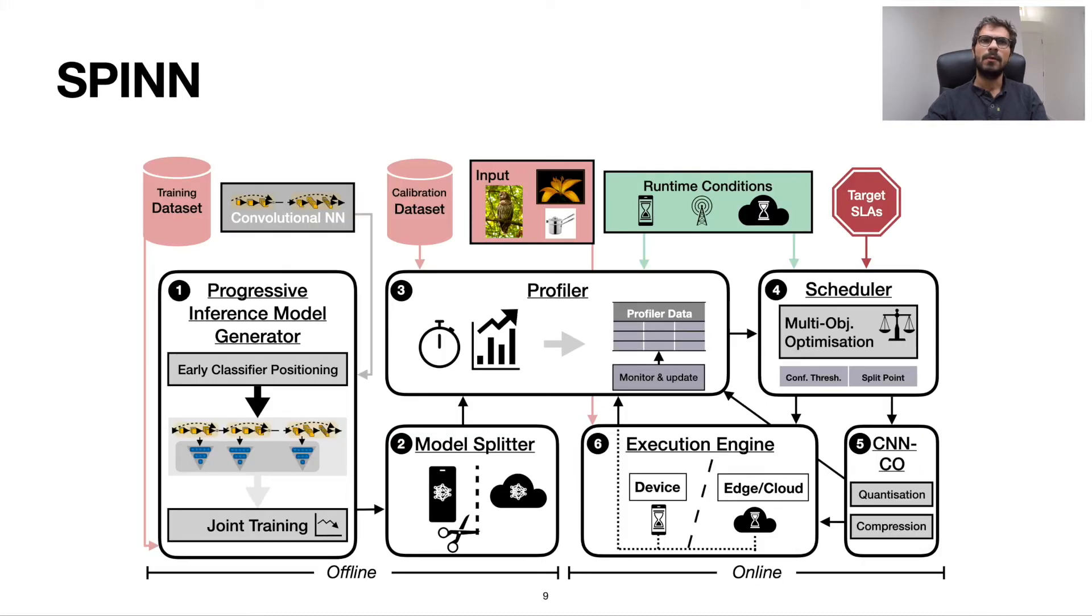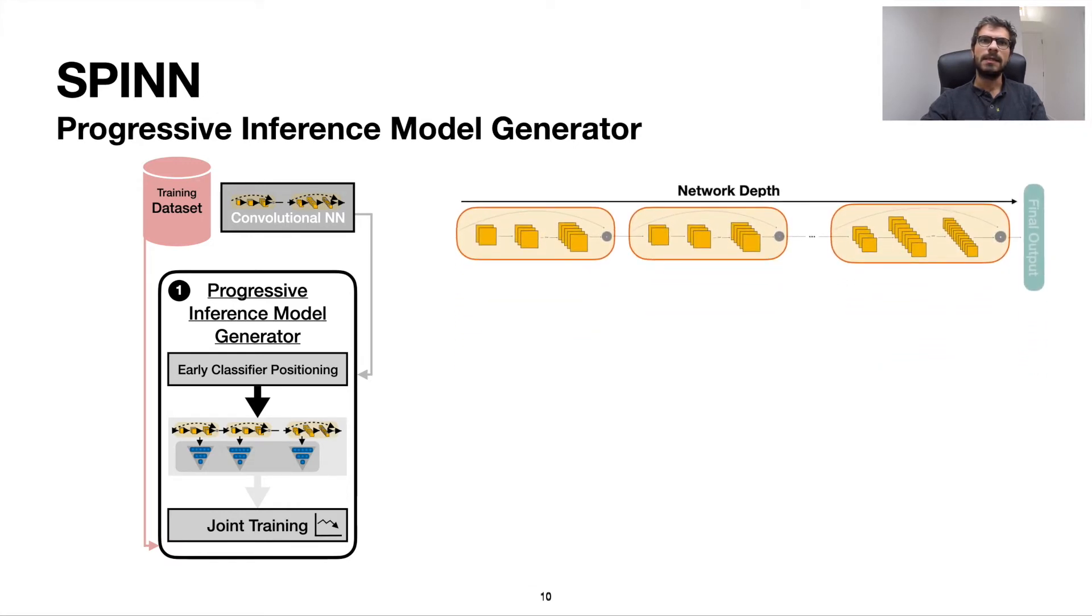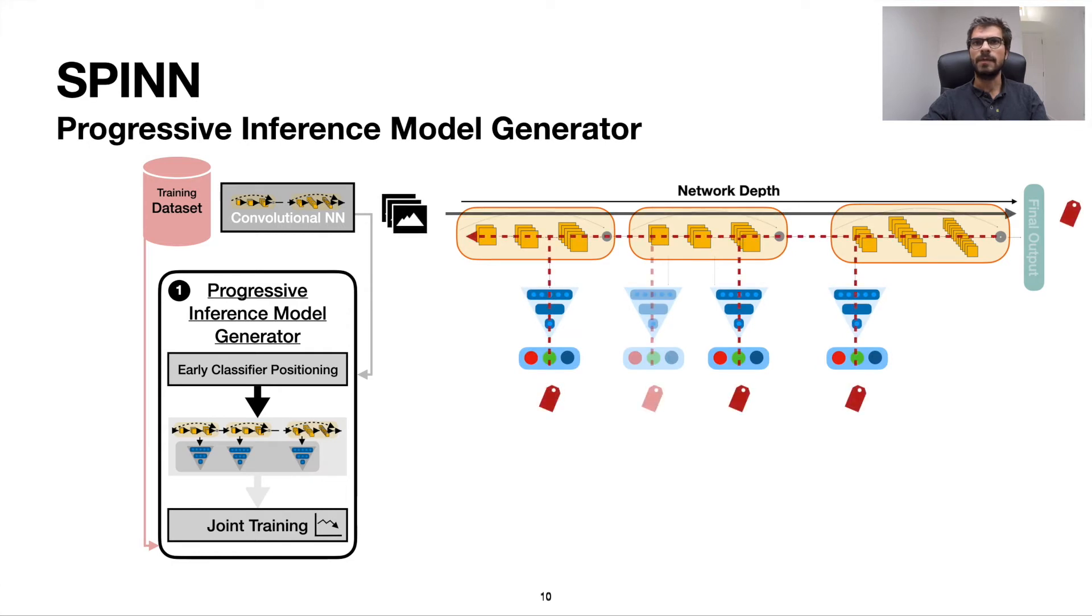Here, we depict the general architecture of our framework, namely SPIN, consisting of several offline and runtime components. Let's go through them. First, we have the Progressive Inference Model Generator, a component which takes a vanilla network, then places early classifiers along its depth, and trains the newly created network on a given dataset.